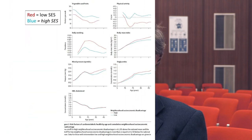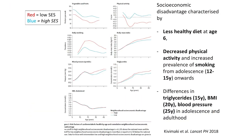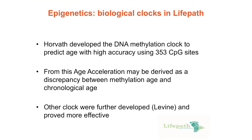Social inequalities get under the skin in several ways. We have focused mainly on two types of indicators. One is inflammation, because it seems that lifelong low socioeconomic condition is associated with chronic inflammation, which predicts long-term health consequences like mortality, poor functioning of the body, or poor aging.